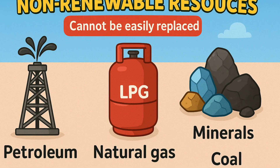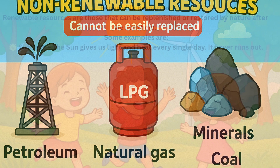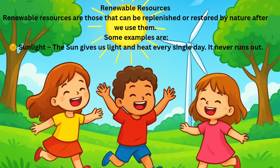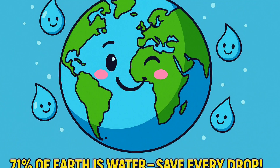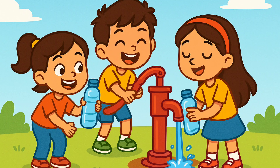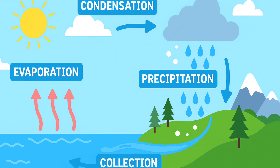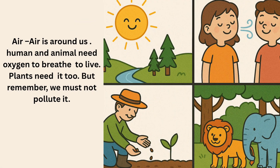Natural resources are of two kinds: one, renewable resources, and two, non-renewable resources. Renewable resources are those that can be replenished or restored by nature after we use them. Some examples are sunlight — the sun gives us light and heat every single day and never runs out — and water. About 71% of our earth is covered with water. We use it for drinking, washing, farming, and industries. Through the water cycle, rain brings it back to us.